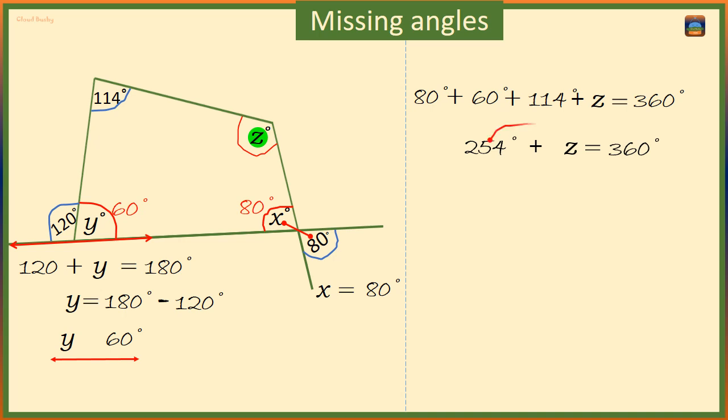Taking 254 degrees to the right hand side, we have z is equal to 360 degrees minus 254 degrees. So angle z is equal to 106 degrees.